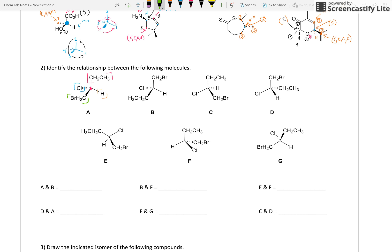So then it asks for the relationship between these molecules. Remember, if you have one chiral center, your options are pretty limited in terms of what the relationship is. We can have an enantiomer or it can be the same molecule.